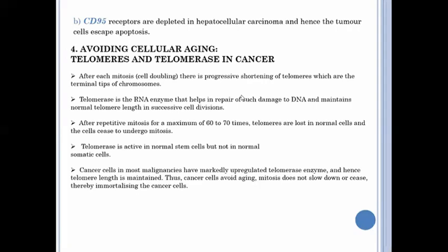After each mitosis or cell doubling, there is a progressive shortening of the telomeres, which are the terminal tips of the chromosome, and there is a loss of an arm of the gene. The telomerase is the RNA enzyme that helps in repair of such damage to the DNA and maintains the normal telomere length in successive cell divisions. After repetitive mitosis for a maximum of 60 to 70 times, the telomeres are lost in normal cells and the cells cease to undergo mitosis.